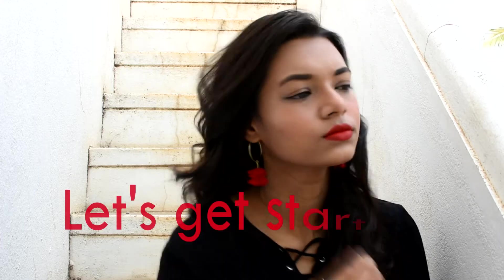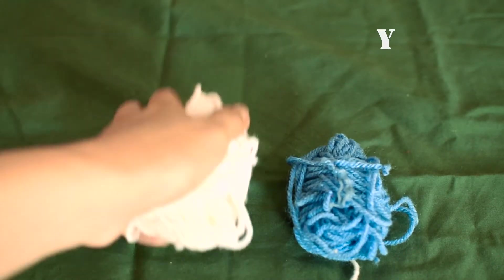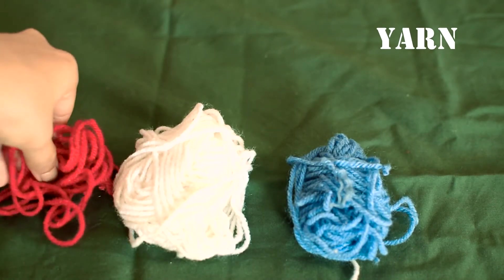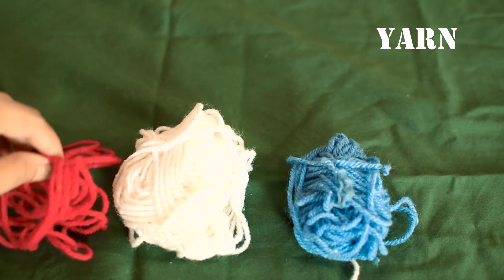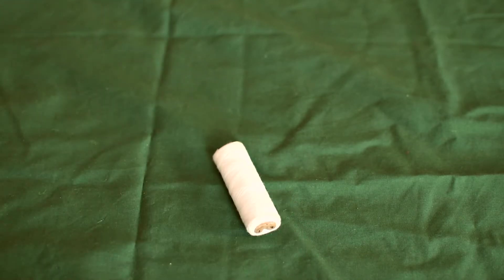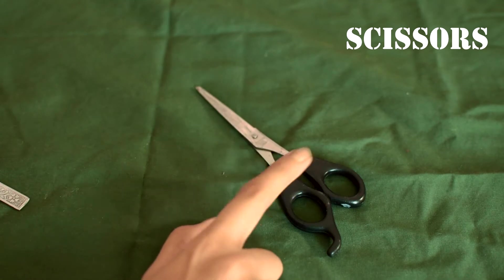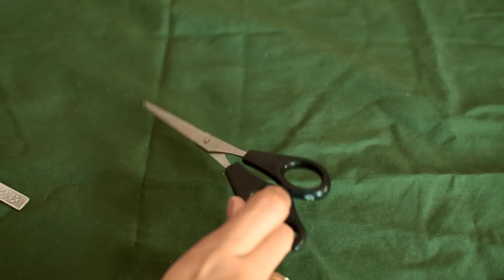So for today's video we are going to make some DIY pom-pom bookmarks and some earrings, so let's get started. For making the pom-poms, all you need is some yarn. As you can see I clearly did not have enough red yarn. Then you'll be needing some thread, a fork, a pair of scissors.